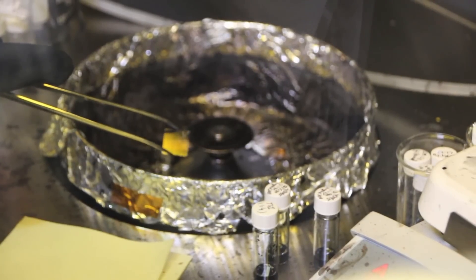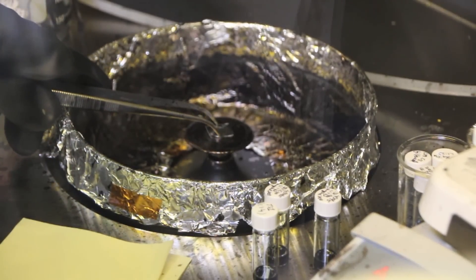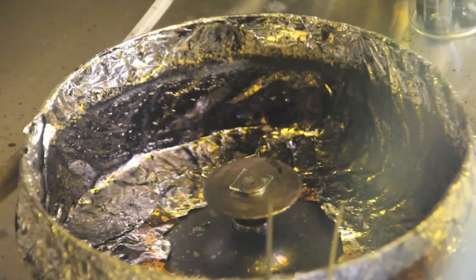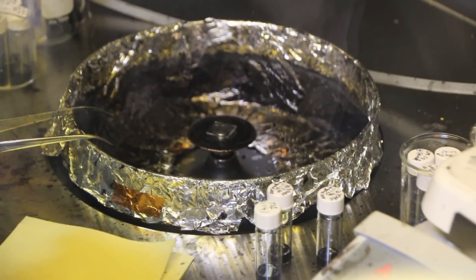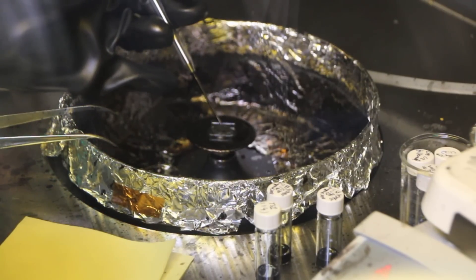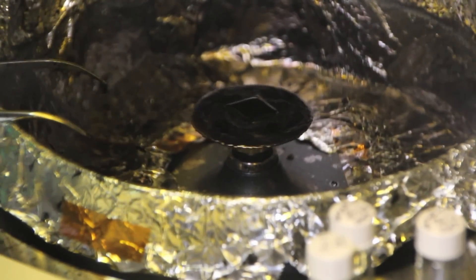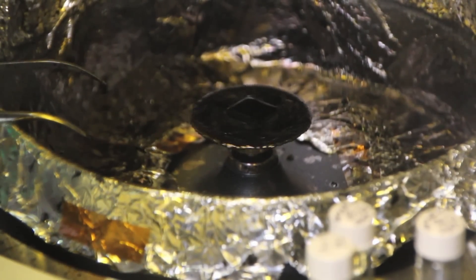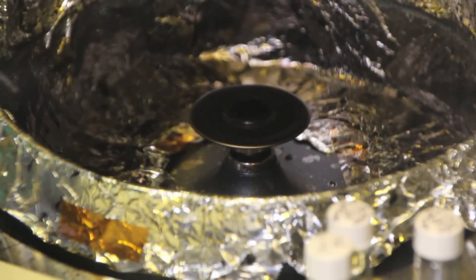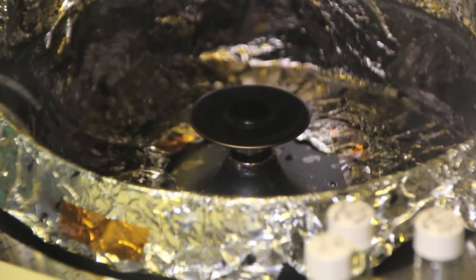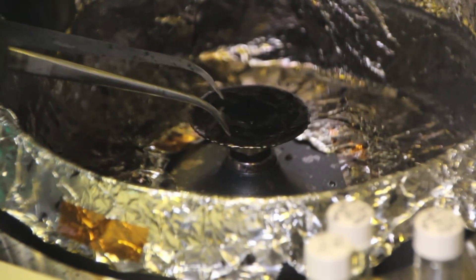Next, it's time for active layer coating. The substrates are placed on the hotplate for about 15 minutes. The heat allows for uniformity of the active layer on the substrate. The solution is dropped onto the substrate and is spun at 1600 RPM for around 20 seconds. After coating, the devices are vacuum dried for an hour and annealed at 100 degrees Celsius for 5 minutes.